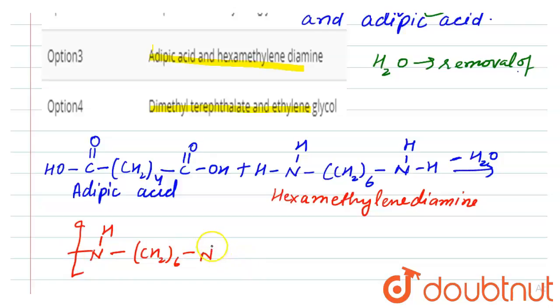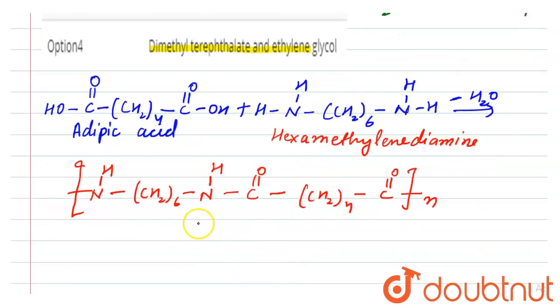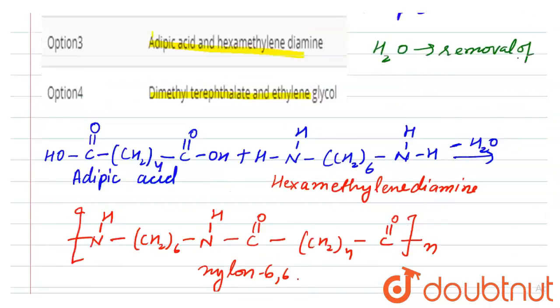-N-H-C(=O)-(CH2)4-C(=O)-, up to N. So it is the formula of Nylon-6,6. So let's see the options.